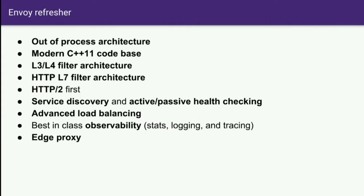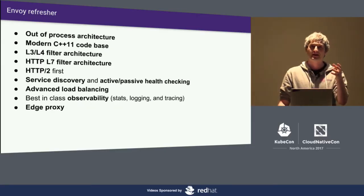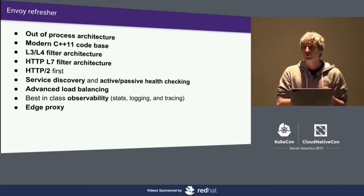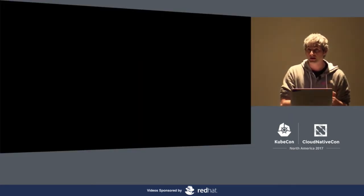Envoy is a self-contained proxy — it is not a library, so it's an out-of-process architecture. Envoy is written in C++11, so it's very fast as well as very productive. Fundamentally, Envoy is an L3/L4 filter architecture, meaning bytes come in and bytes go out, so we can support multiple protocols: REST, Redis, MongoDB, MySQL. And because we do lots of HTTP/1 and HTTP/2, we do a lot of filtering up at L7, operating on message boundaries — headers, body, as well as trailers.